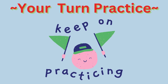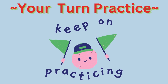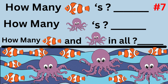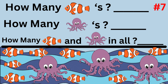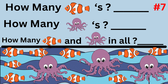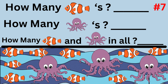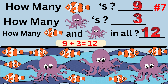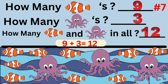Now it's your turn to complete addition word problems. Word problem number seven asks: how many clownfish are there? How many octopuses are there? How many clownfish and octopuses in all? The answer is there are nine clownfish and three octopuses, giving a total of 12 animals in all. The number sentence is 9 plus 3 equals 12.